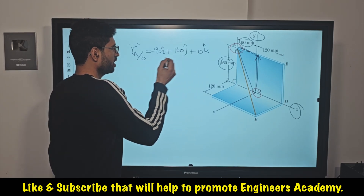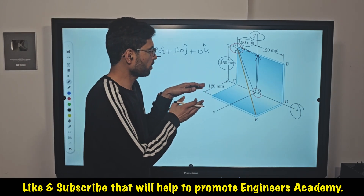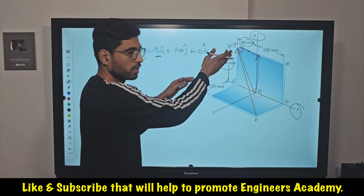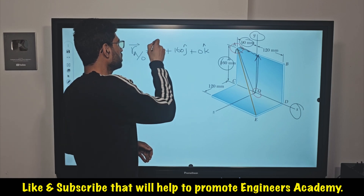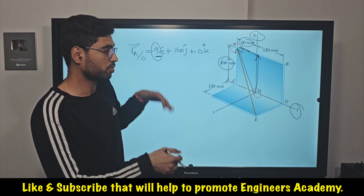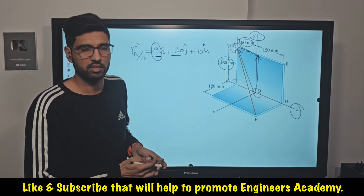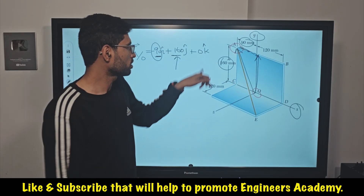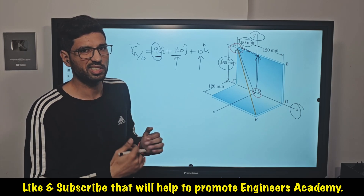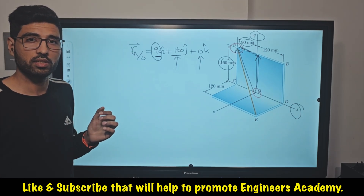This tells us that point A is 90 mm away from point O in the negative x direction. If we look at this diagram from this direction, point A is at a distance of 90 mm in the negative x. So the distance between point O and A along the x-axis is 90 mm, and point A is in the negative x direction. Similarly, this tells us that the distance between point A and point O along the y-axis is 160 mm, and that point A and point O are in the x-y plane — the distance between them along the z-axis is 0. This is the first method of how we can find the position vector of A relative to O.